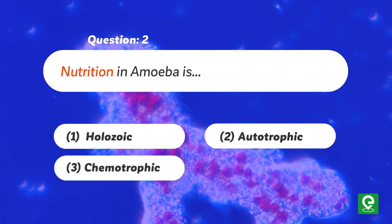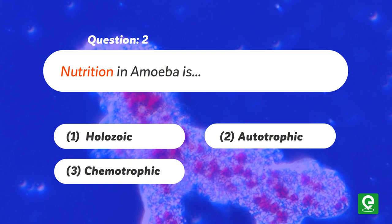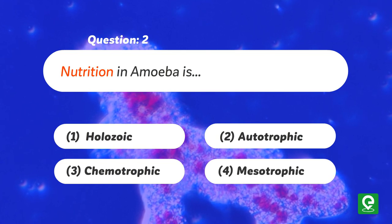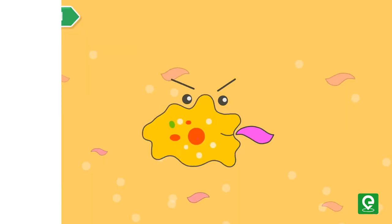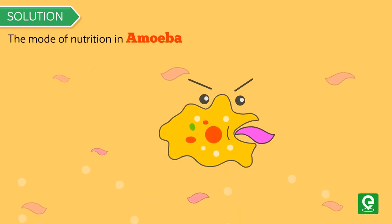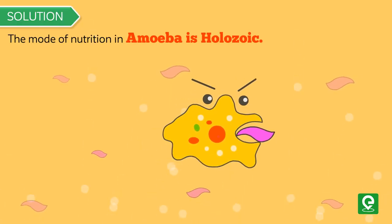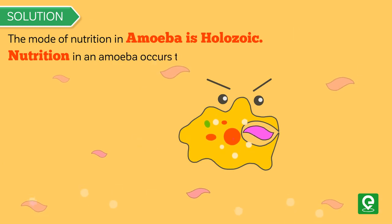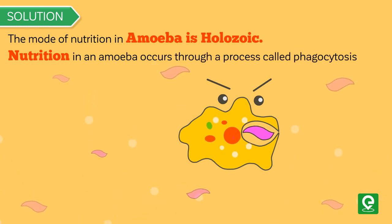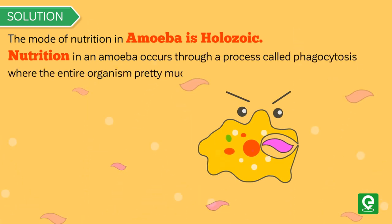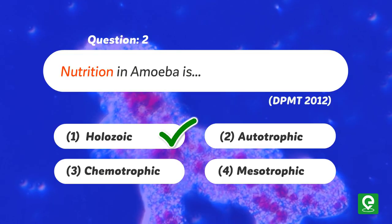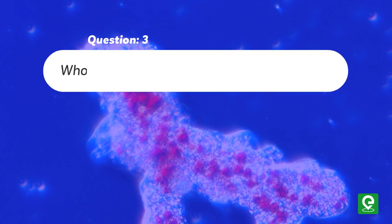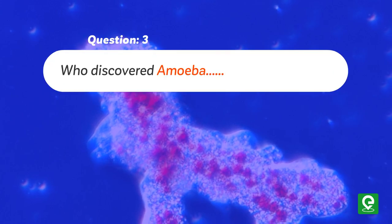Question 2: Nutrition in amoeba is — 1) Holozoic, 2) Autotrophic, 3) Chemotrophic, or 4) Mesotrophic. This question was asked in Delhi PMT 2012. Solution: The mode of nutrition in amoeba is holozoic. Nutrition in amoeba occurs through a process called phagocytosis, where the organism engulfs the food it plans on eating. Hence option 1 is correct.